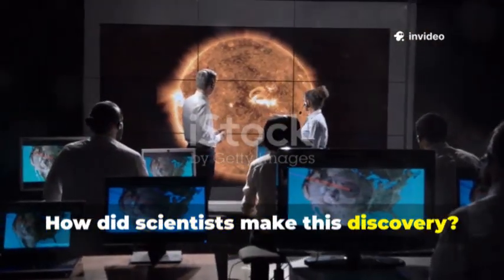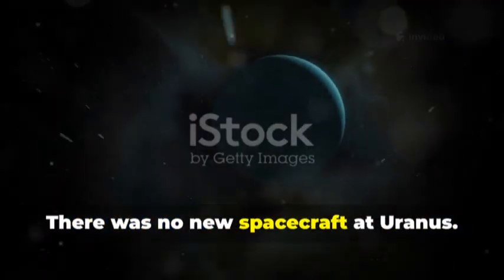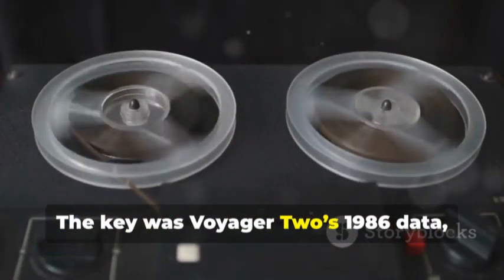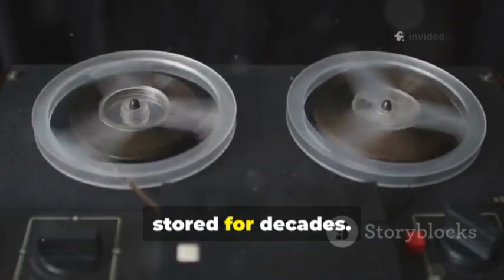How did scientists make this discovery? There was no new spacecraft at Uranus. The answer? A brilliant combination of old and new. The key was Voyager 2's 1986 data stored for decades.